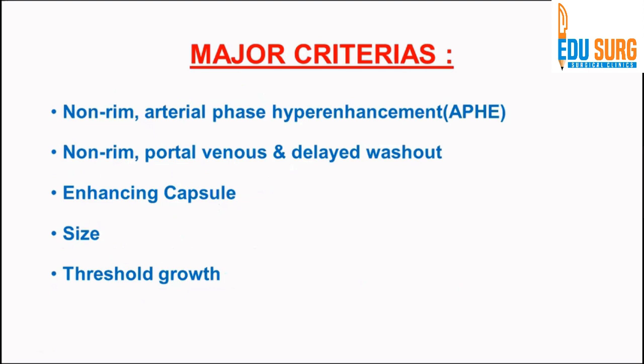The major criteria for diagnosis of HCC according to LI-RADS: any tumor in the cirrhotic background showing non-rim arterial phase hyperenhancement — the lesion core must show hyperenhancement, not only the margin. Similarly, the washout should be non-rim type, seen in the portal venous and delayed phases. An enhancing capsule is also a major criterion — it enhances in the delayed phase because it is composed of fibrotic material and extracellular matrix that gathers contrast, producing a sharp enhancing capsule.